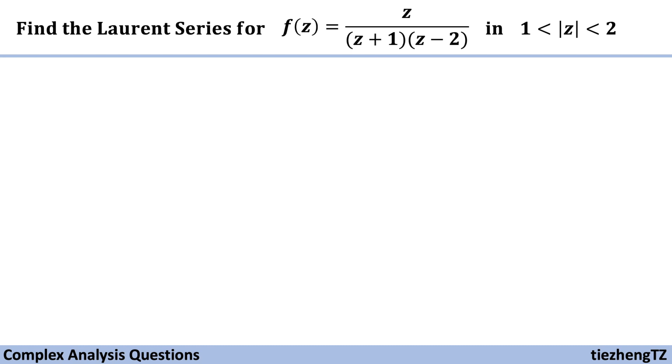The question is to find the Laurent series for this function z over (z+1)(z-2) in this given domain where z modulus is between 1 and 2.